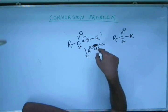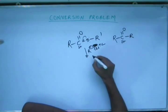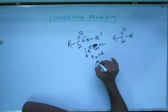If we add R minus attached to copper plus 2 ion or for that matter if I add dialkyl cadmium, R attached with cadmium, there will be no reaction.